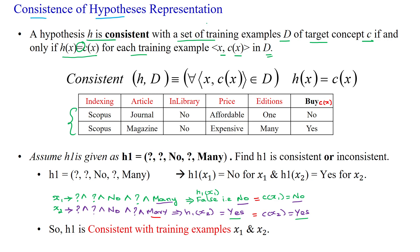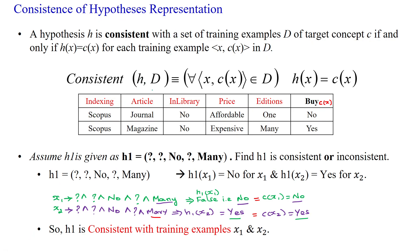So here we have the set of training examples — two examples given — where these features are X and Y is C of X. So with respect to each and every training example, we have to prove that H of X is equal to C of X. The notation: consistent of any hypothesis H with respect to given dataset D, for all training samples X comma its corresponding C of X, the target concept belongs to given dataset D, so H of X is always equivalent to C of X.